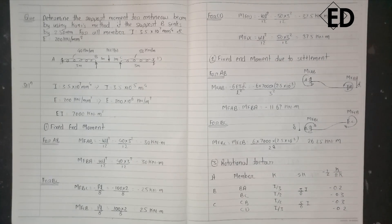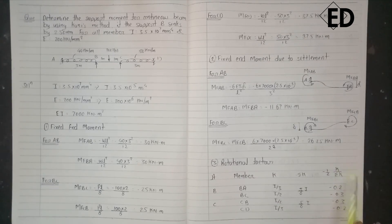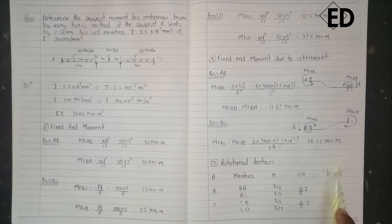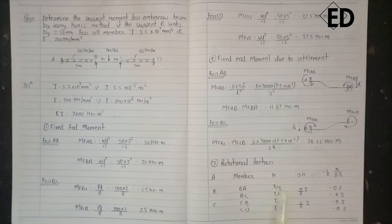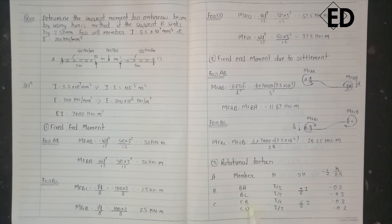Now moving towards our third step, that is the rotational factor. As from our last video, the rotational factor is u = minus half of k divided by the summation of k. As all supports are fixed, we use I/L for each span. Directly we get the rotational factors: for BA = minus 0.2, for BC = minus 0.3, for CB = minus 0.3, and for CD = minus 0.2.